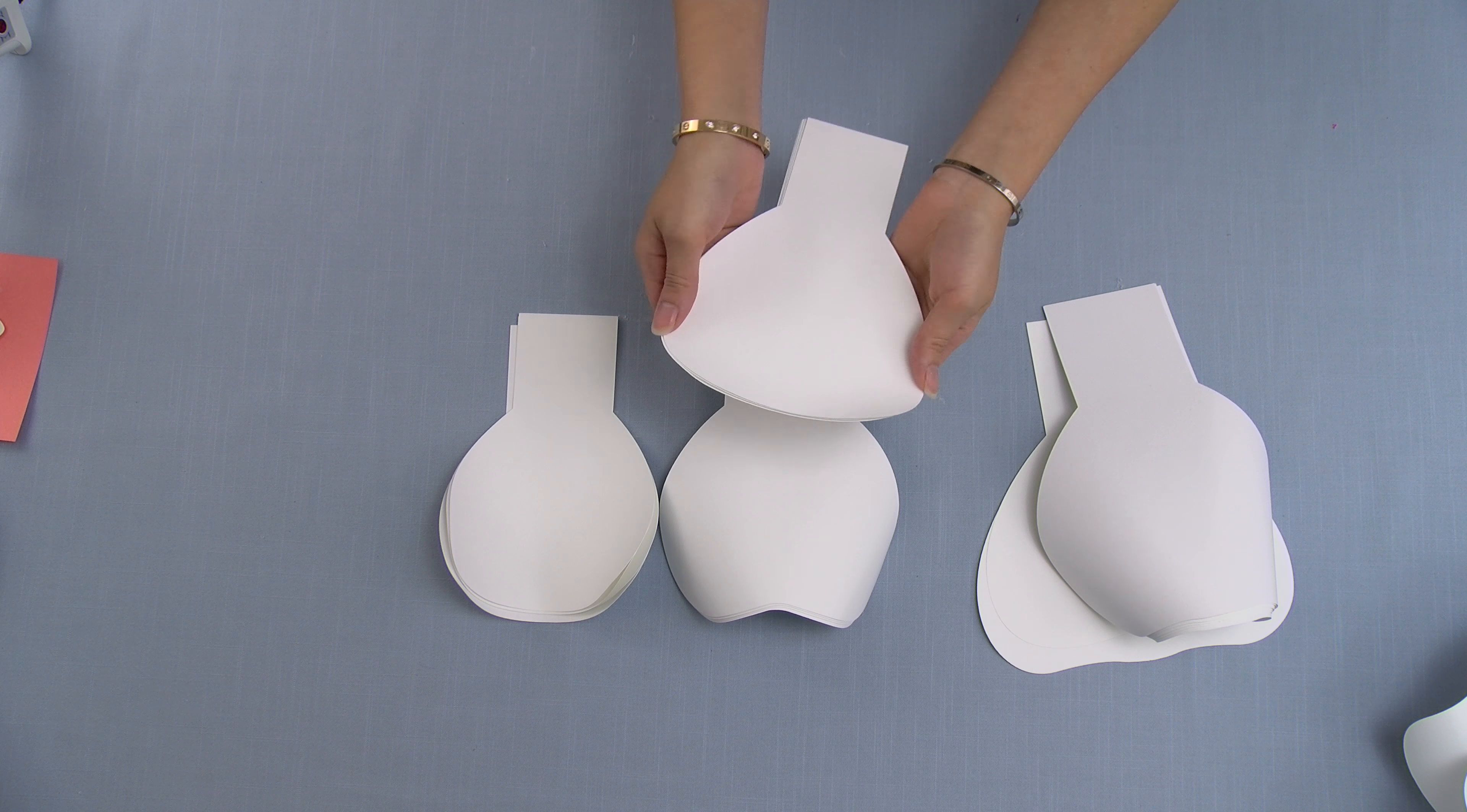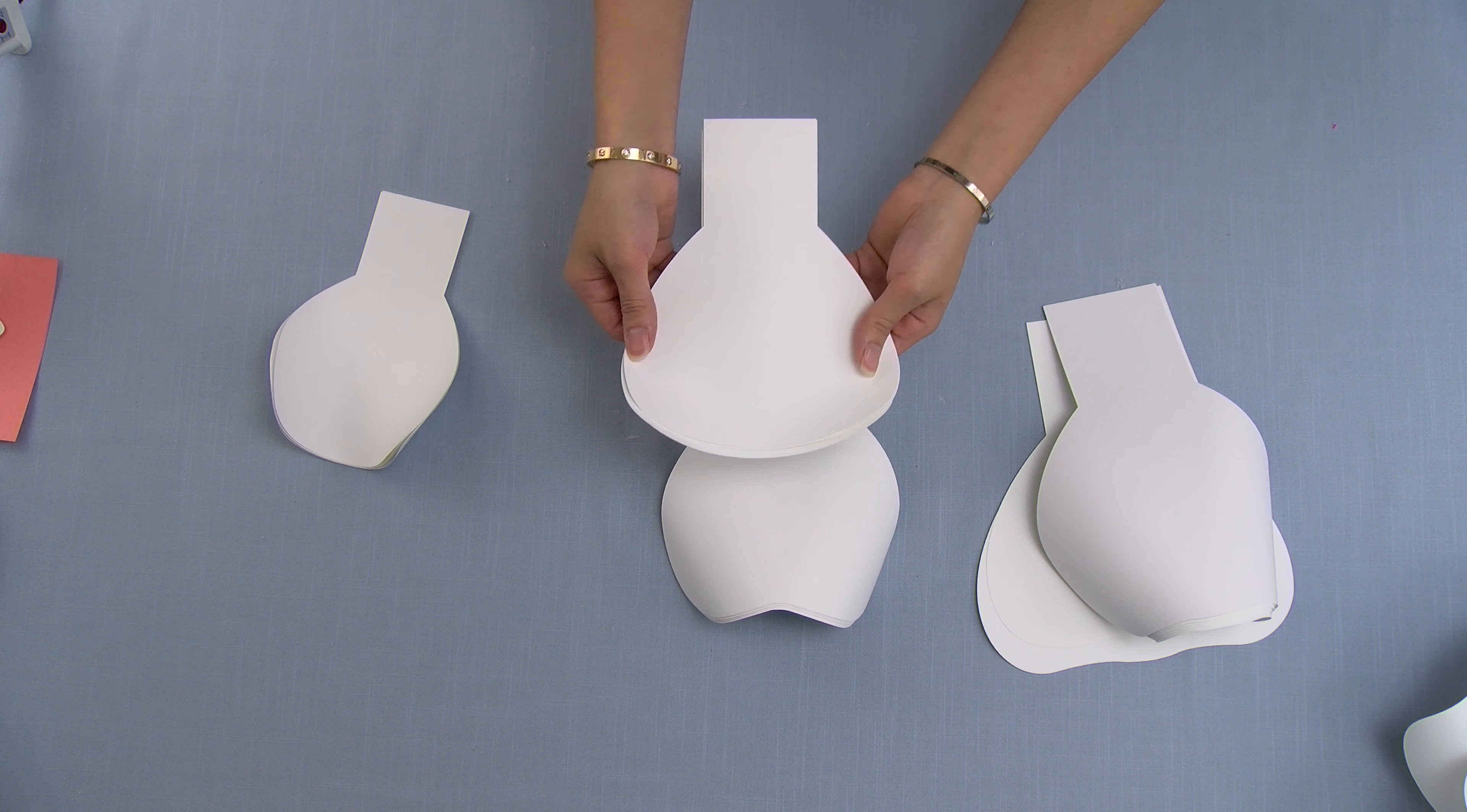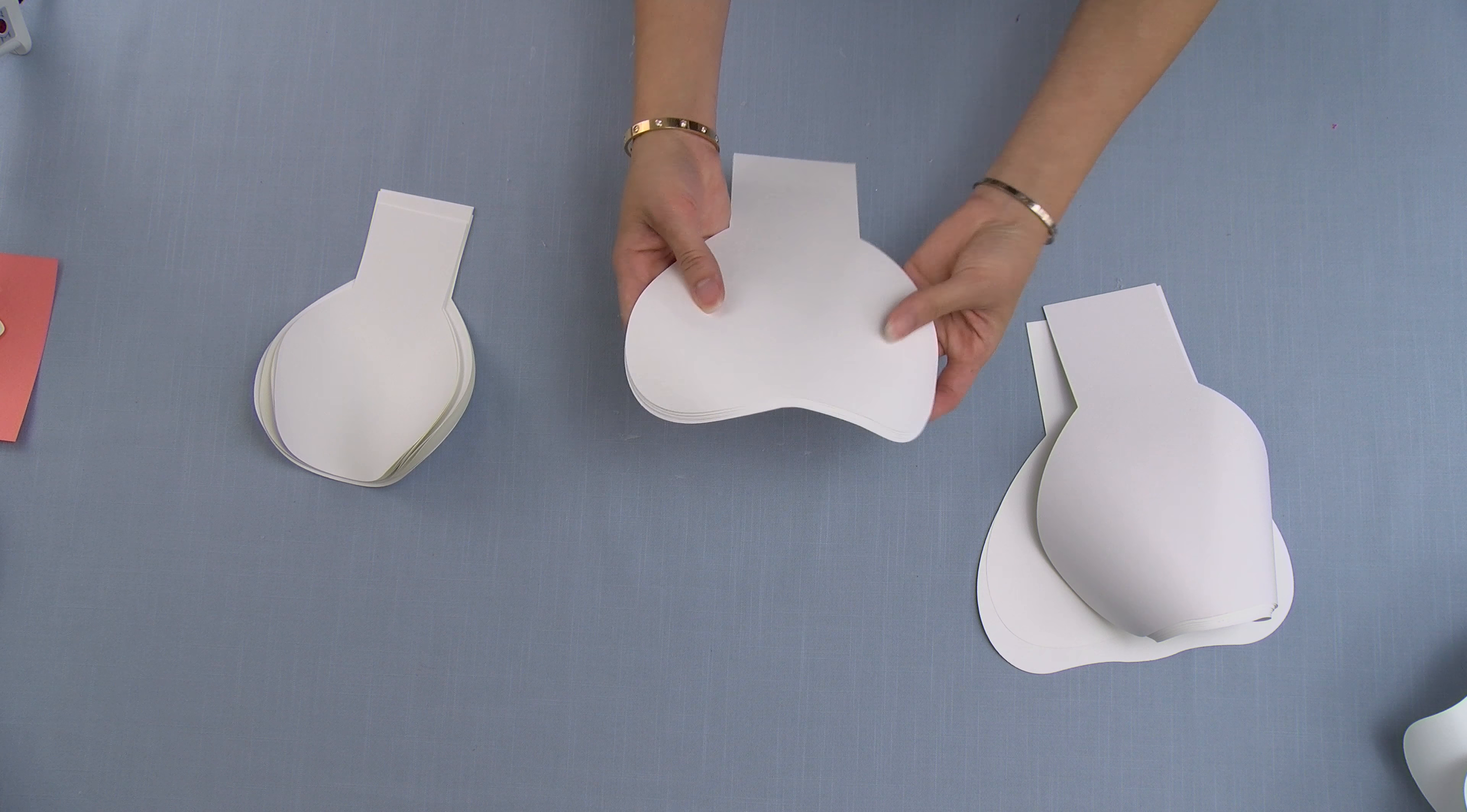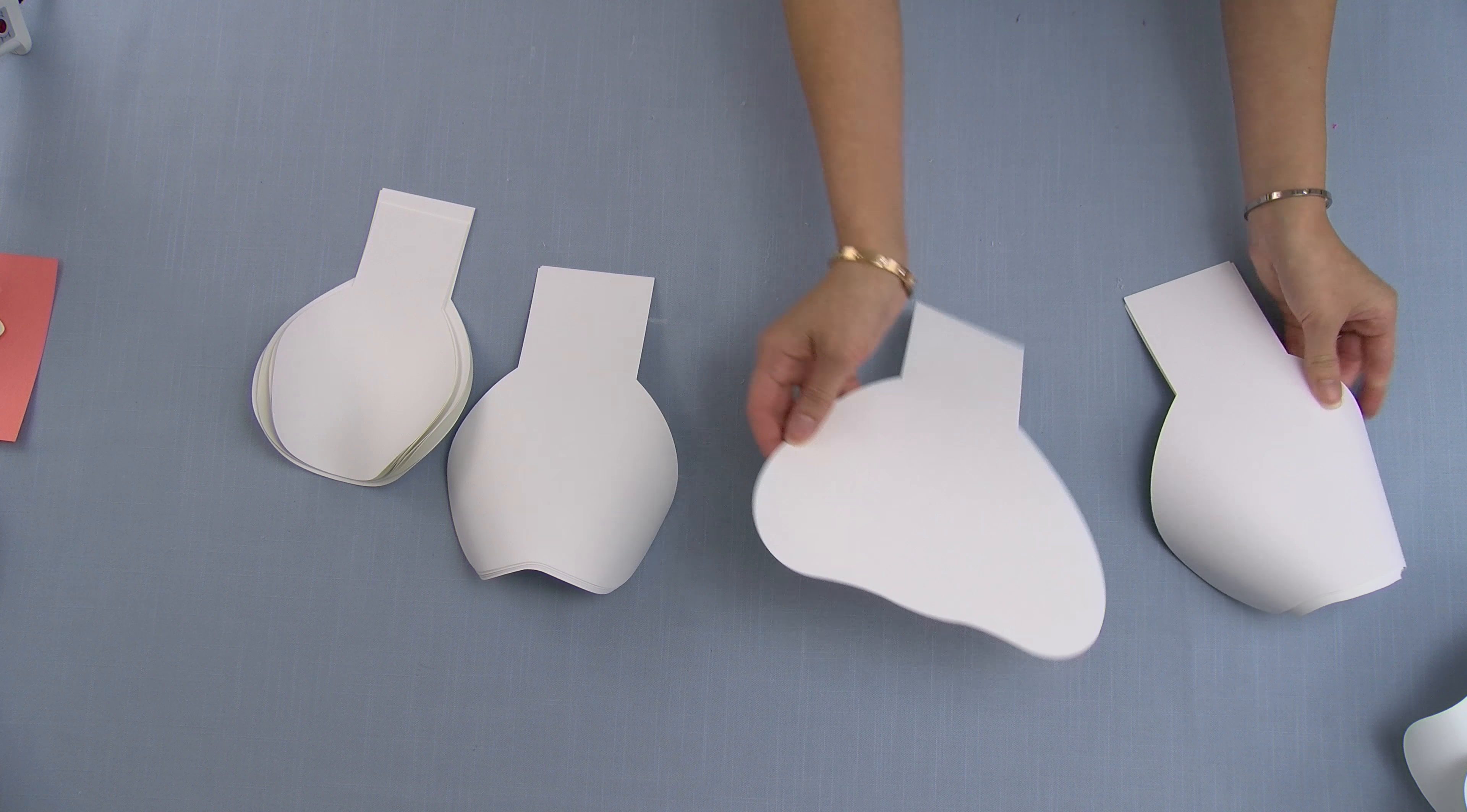So to get started, you're going to need four cuts of the small round petal, four cuts of the second round petal, eight cuts of the heart-shaped petal, and then 12 cuts of the wavy shaped petal.